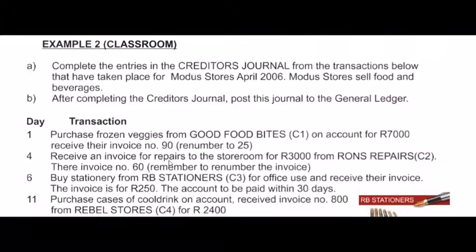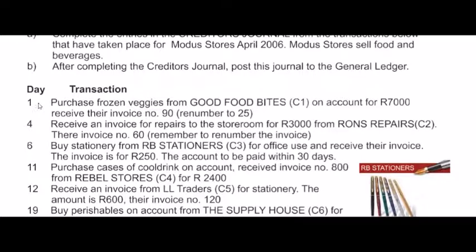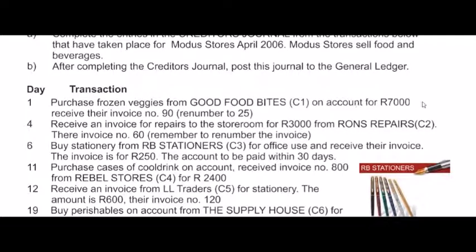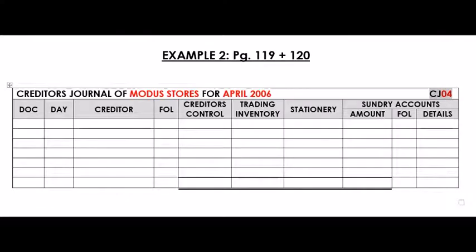On the 1st, we purchase frozen veggies from Good Food Bites on account. That indicates this is a CJ transaction for 7,000 Rand. We receive their invoice number 90, but we renumber it to number 25. Remember something special about the CJ: we always use renumbered invoices. So the document number will not be 90 — it will be our renumbered number 25, on the 1st.